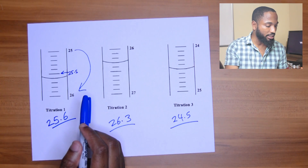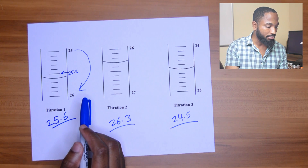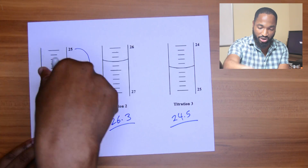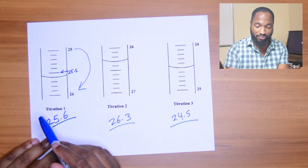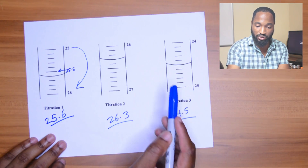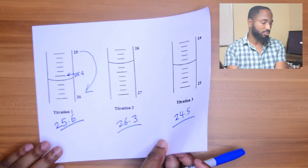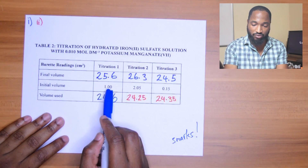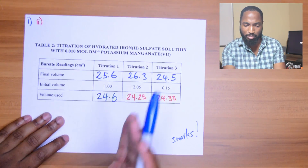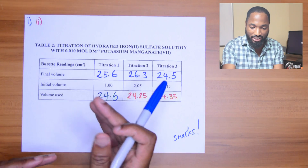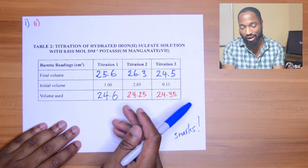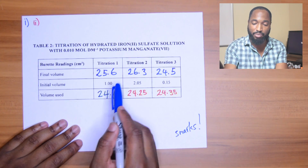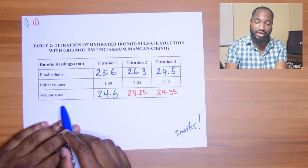Next up, they want you to get the readings on the burette. Remember your readings go down - 25 to 26, 26 to 27 - going down because you're using up the solution. So you get readings like 25.5, 25.6, 26.3, 24.5. Then you take the final readings, put them in the table, and subtract from your initial volume to get your titre. Your burette doesn't always hit back to zero - when you fill it up you might start at 1 or 2.05, so just work with that. You get 24.6, 24.25, 24.35.